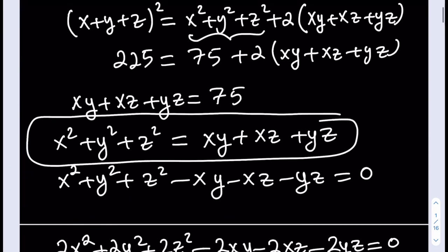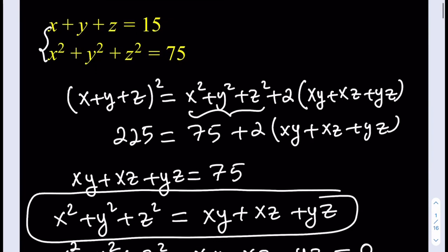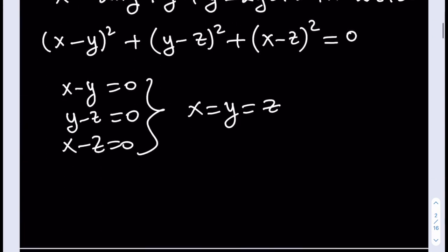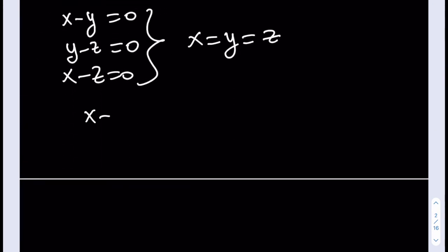Now, once we know that, and we know that the sum of x, y, z is 15, we can just go ahead and plug it in there. We know that x plus y plus z is equal to 15. And they're all equal. This means that x needs to be 5, y needs to be 5, and z needs to be 5. And that's the only solution, only real solution to this system of equations.